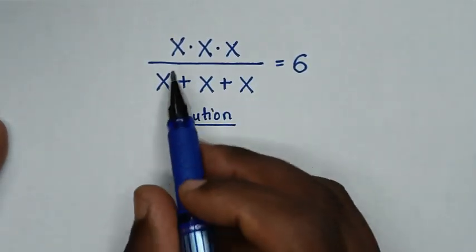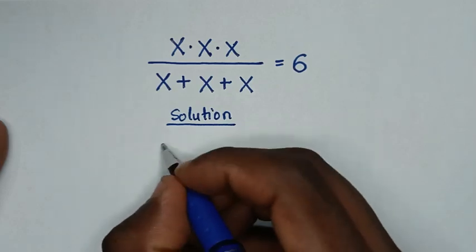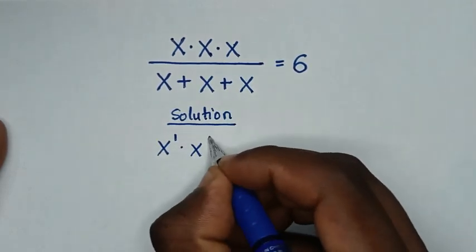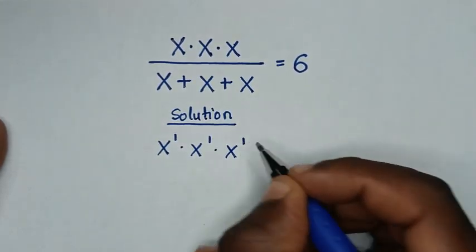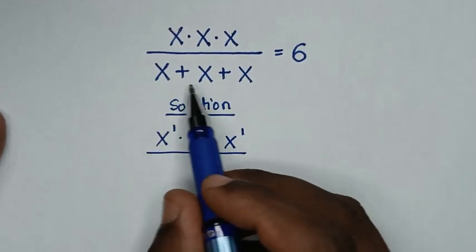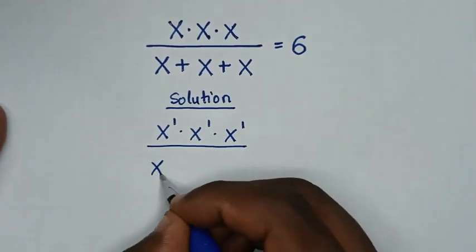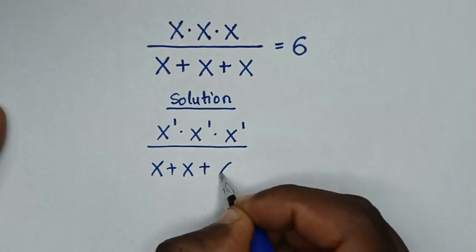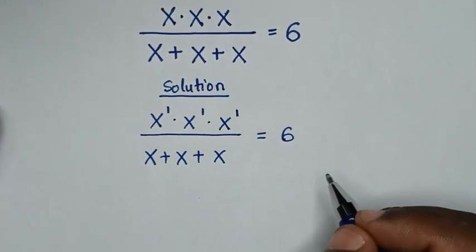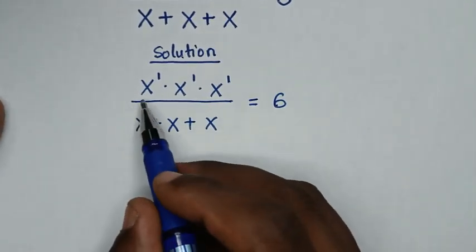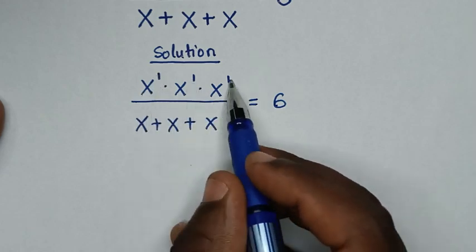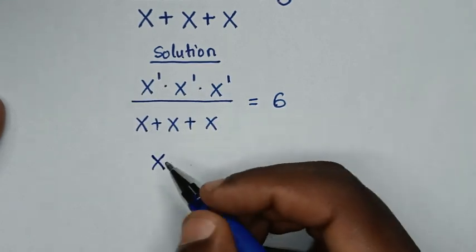From the problem, x times x times x is the same as x power 1 times x power 1 times x power 1 over x plus x plus x. Here, x times x power 1 times x power 1 times x power 1 is the same as x.